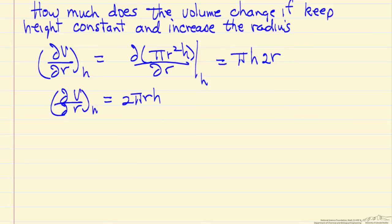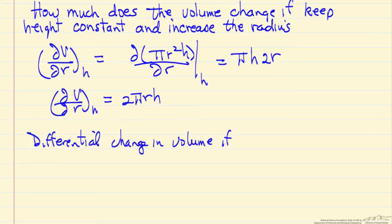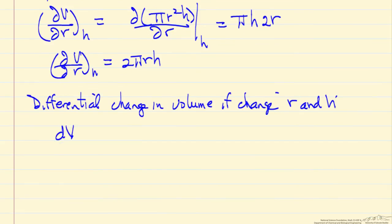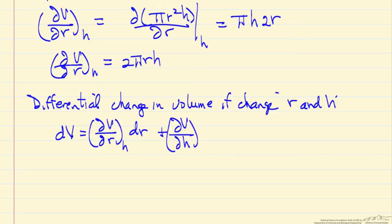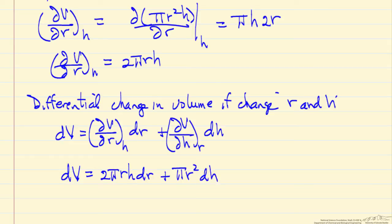Then we ask: what is the differential change in volume if we change both r and h? The differential change in volume is the partial of V with respect to r at constant h, times dr, plus the partial of V with respect to h at constant r, times dh. Using the partials we just calculated, this gives dV = 2πrh dr + πr² dh.